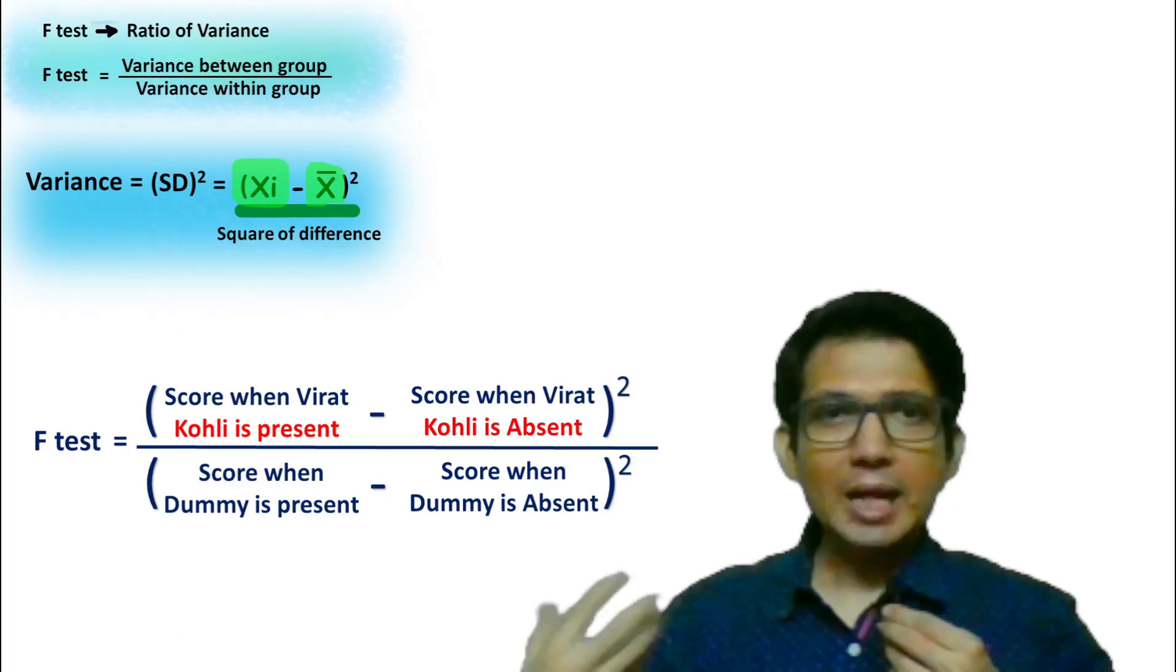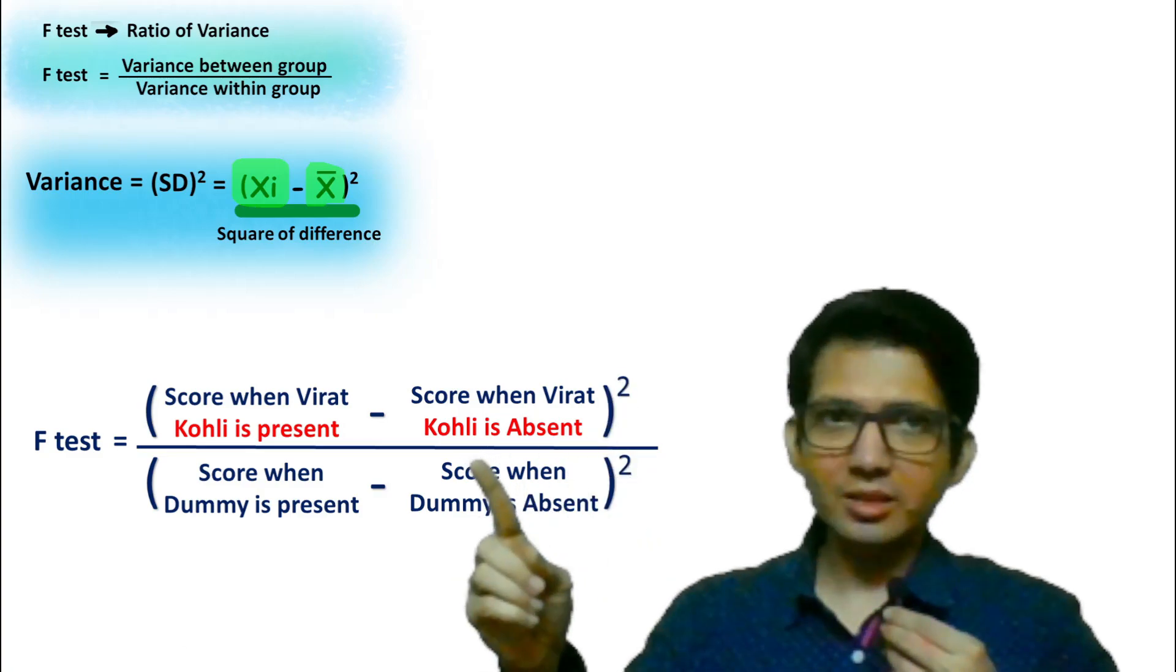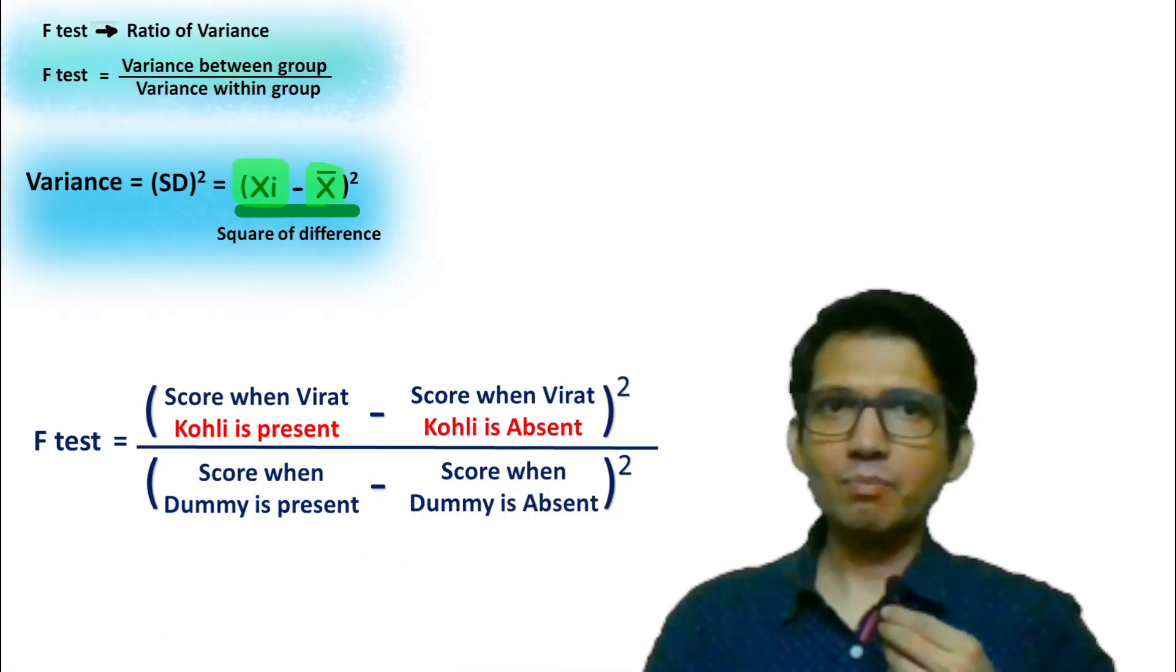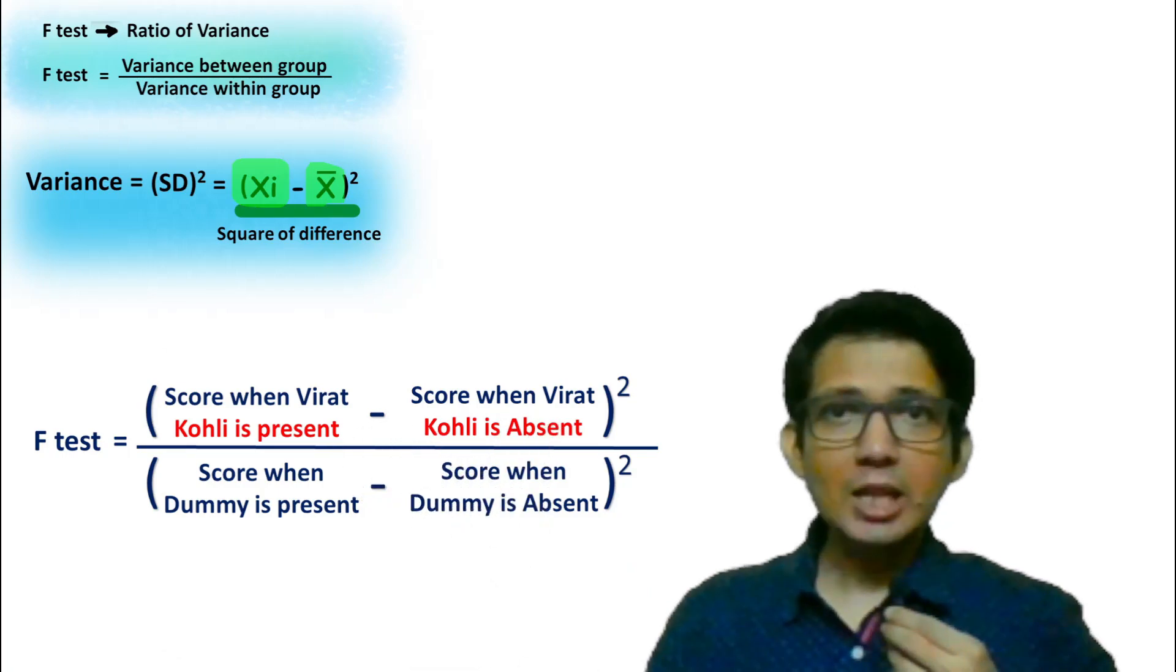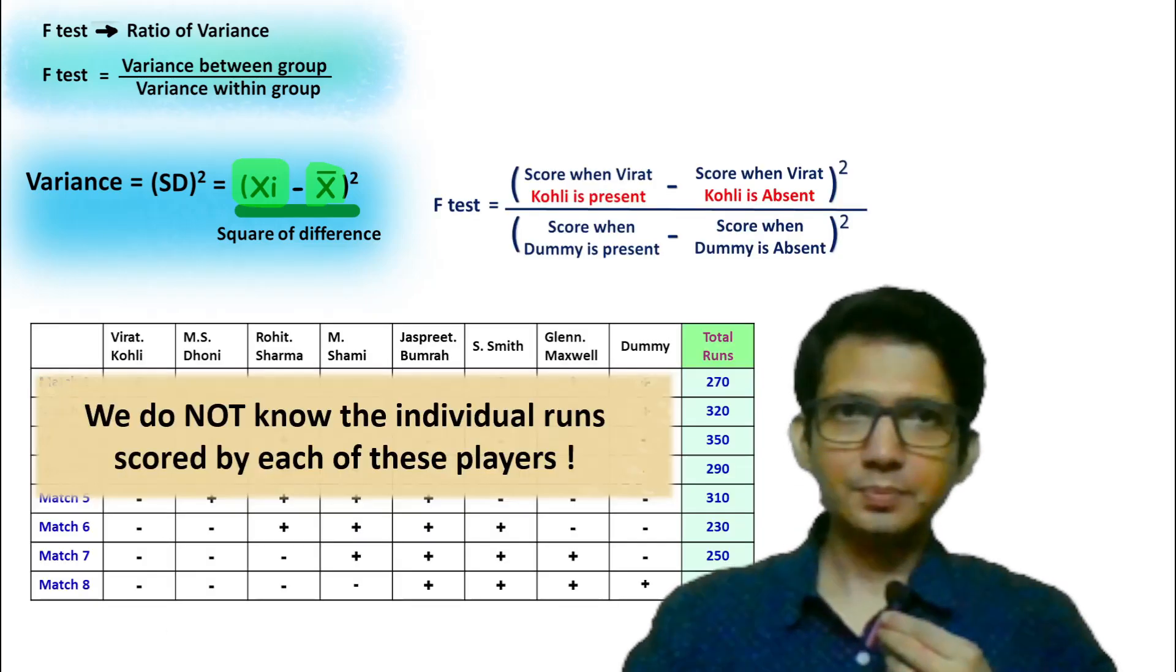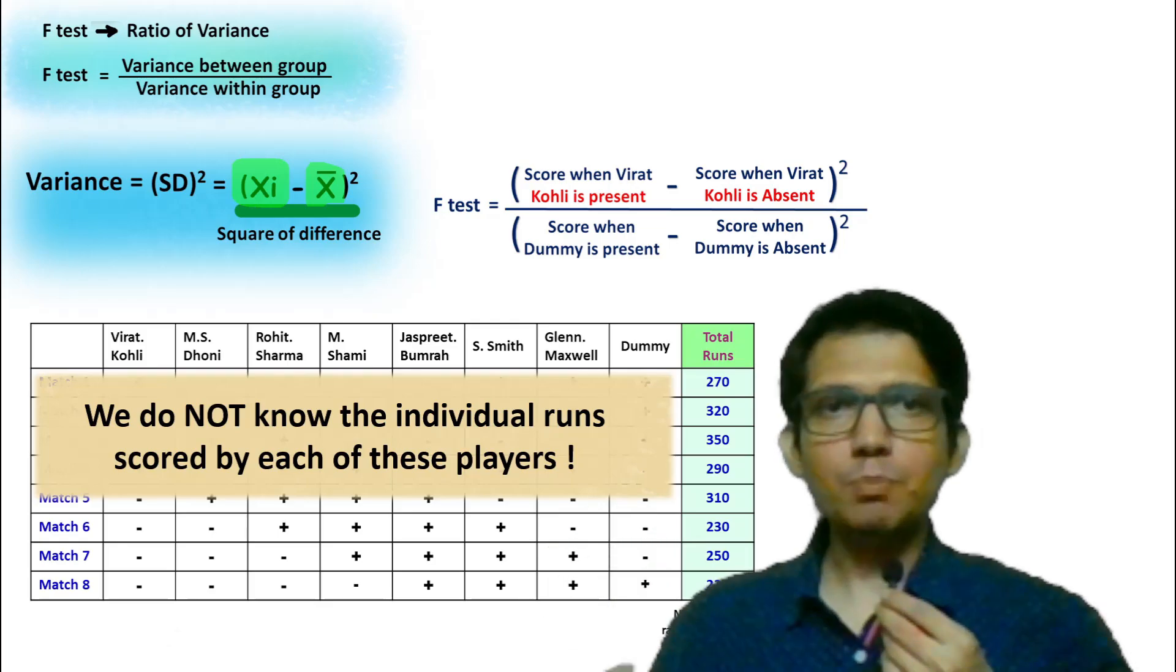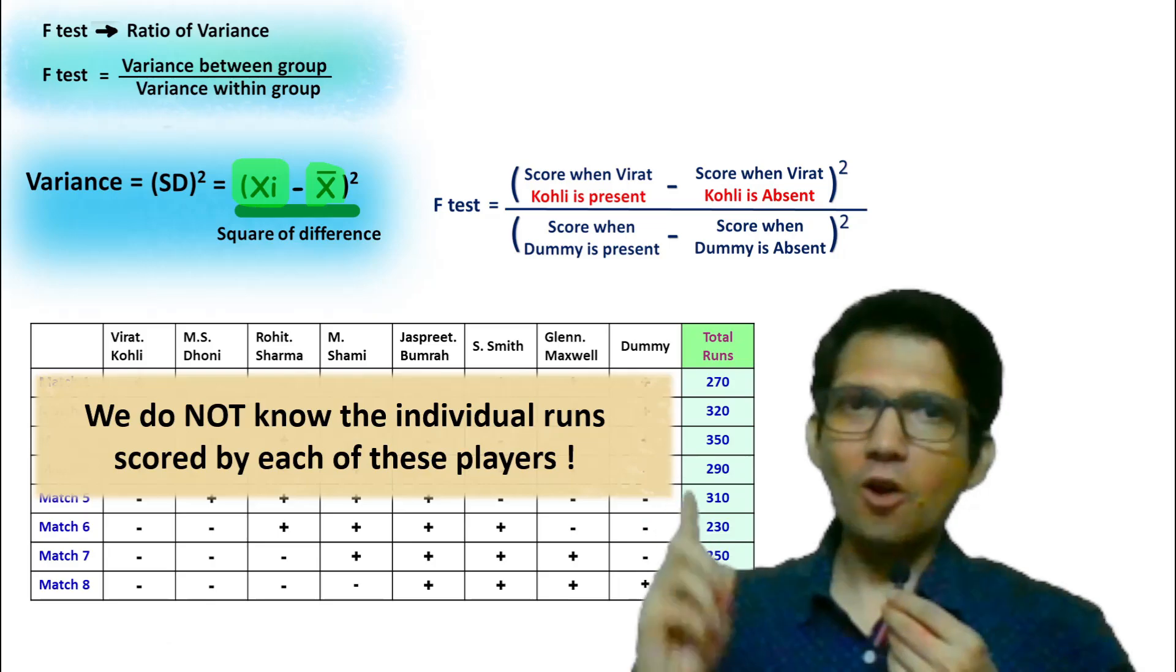In a similar way, in Placket-Burman analysis, we take the square of difference. Difference when the player is present versus when he is absent. This variation is then compared with the dummy to calculate the F ratio. The objective of this F ratio is to find which player is playing well and which player is not playing well, just by looking at the total score of the team.